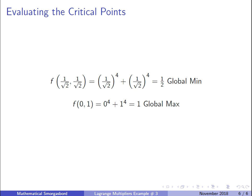Now we have all our critical points and just test them. I've only checked two critical points because the others give the same value — since we're raising to the fourth power, signs don't matter. Evaluating (1/√2, 1/√2): (1/√2)⁴+(1/√2)⁴ = ½. Evaluating (1, 0): 1⁴+0⁴ = 1. Since ½ is the smaller value and 1 is the larger, ½ is the global minimum and 1 is the global maximum.